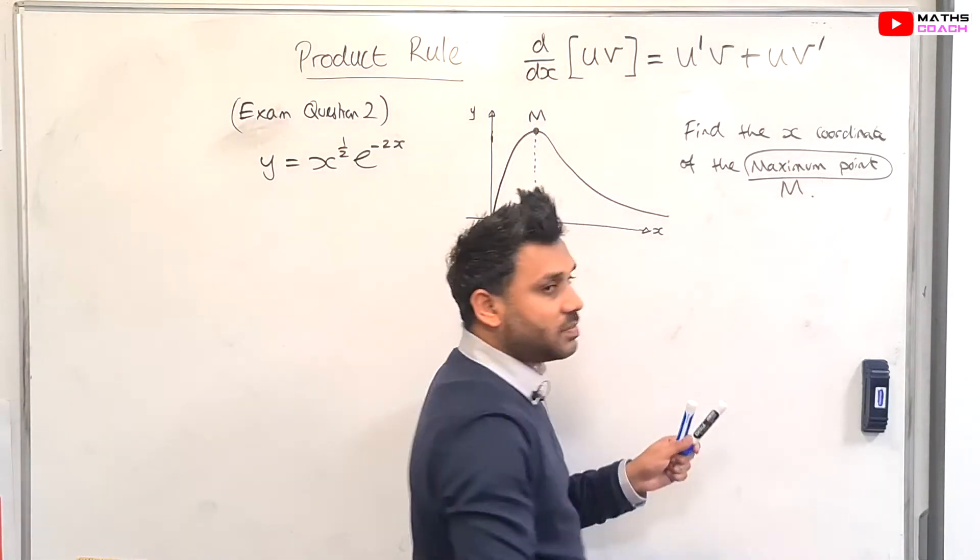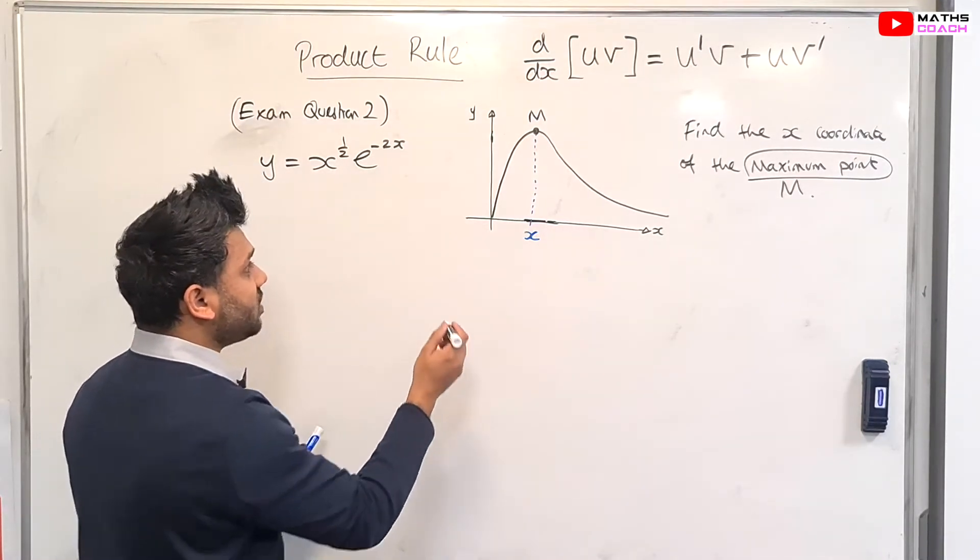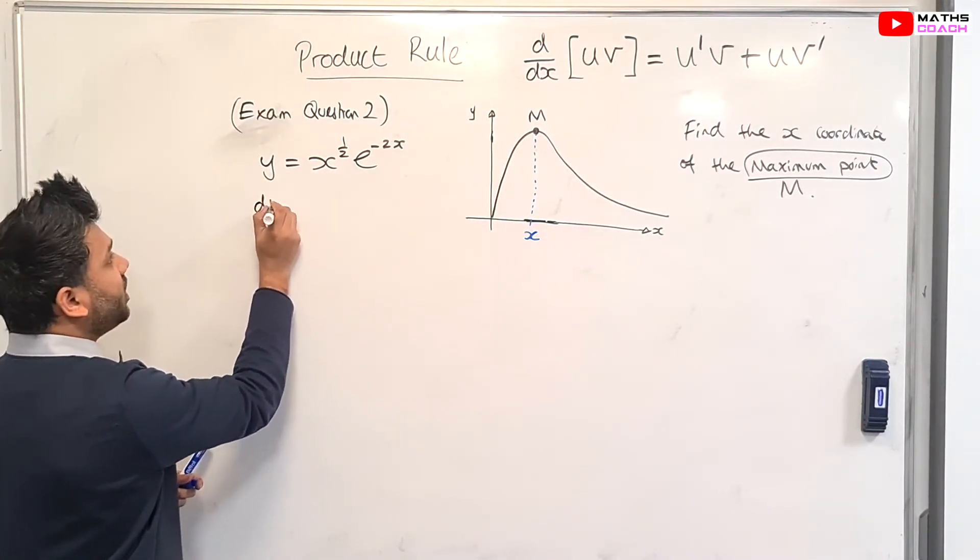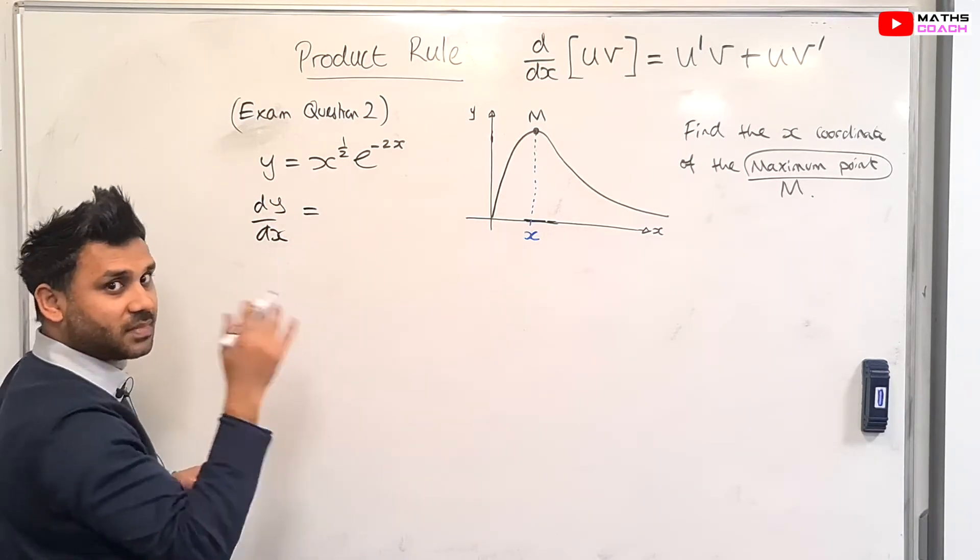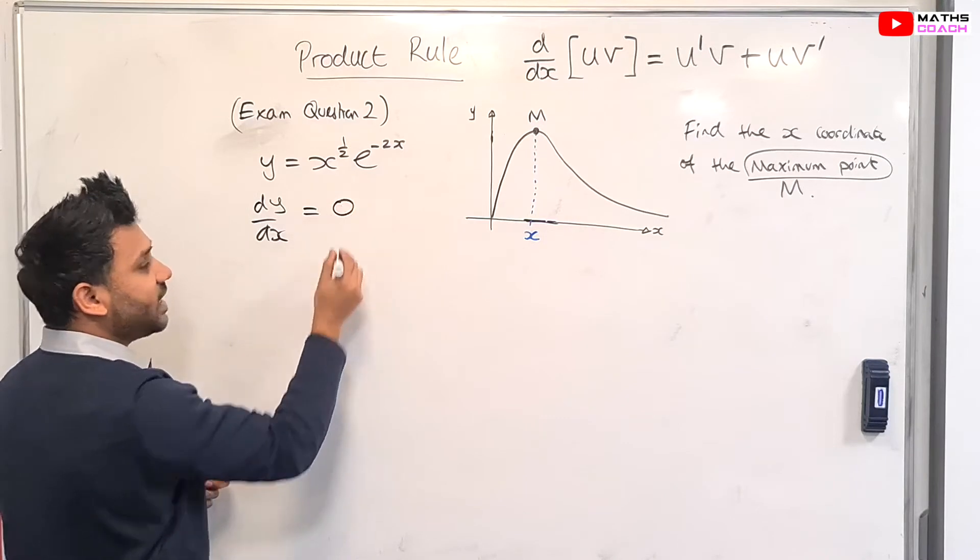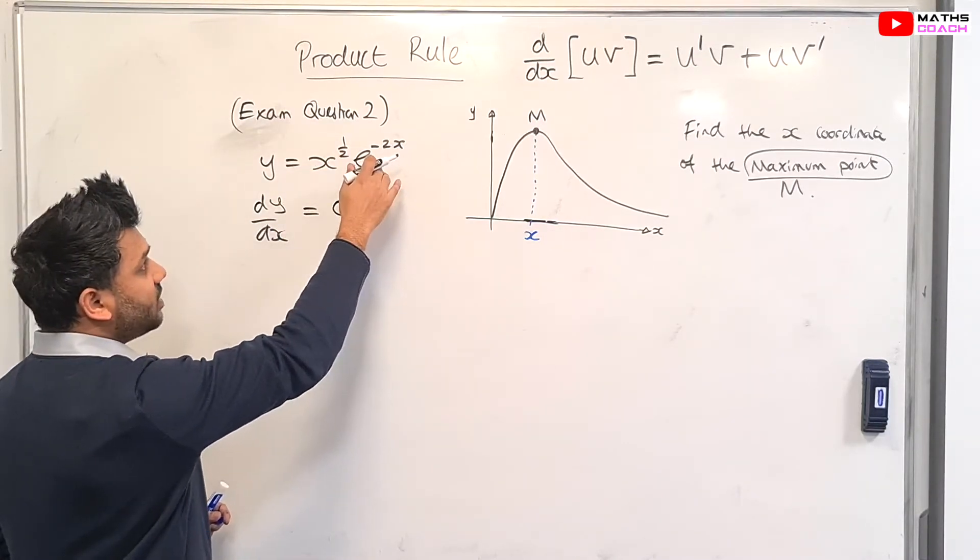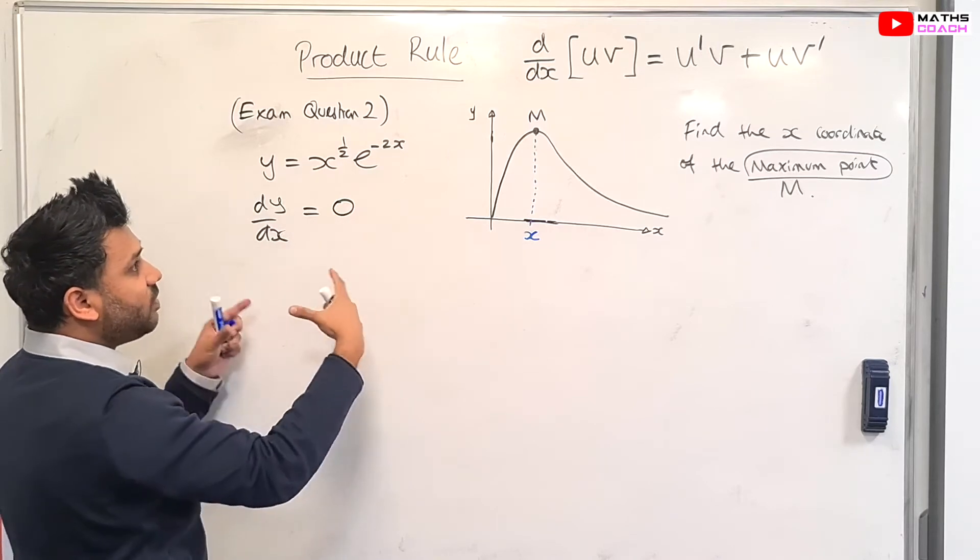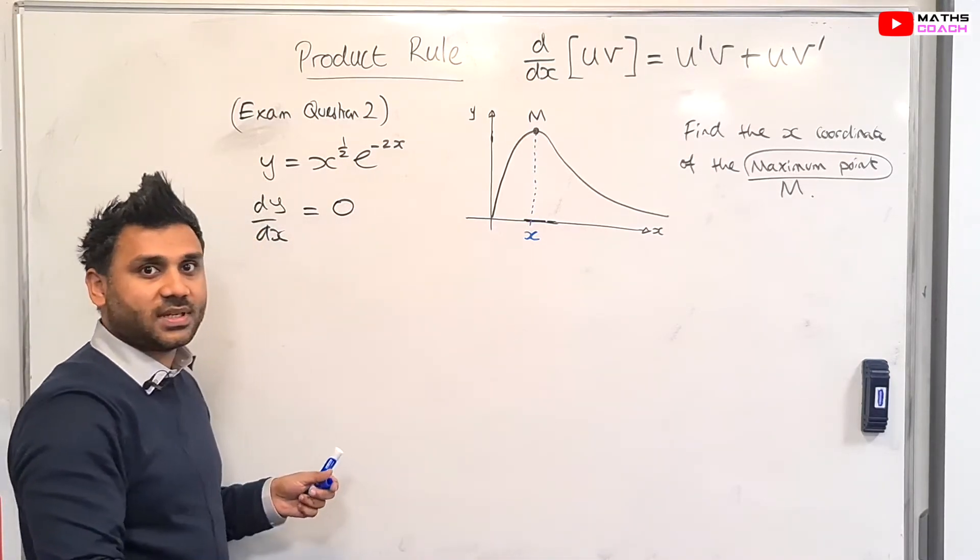In other words, all we need to work out is this x value here that turns this function into its maximum or gives this function its maximum value. Now, to begin, the maximum point is a stationary point. The criteria to be a stationary point is that dy/dx, which is the gradient, must be equal to zero. So in other words, we have to differentiate this and make it equal to zero. And then that will give us an equation to solve.